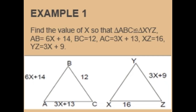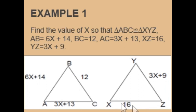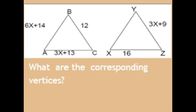Let's take an example. Find the value of x so that triangle ABC is congruent to triangle XYZ. We have AB equal to 6x plus 14, side BC equal to 12, side AC equal to 3x plus 13, XZ equal to 16, and YZ equal to 3x plus 9. The corresponding vertices are: A corresponds to X, B corresponds to Y, and C corresponds to Z.